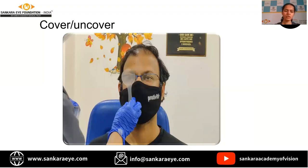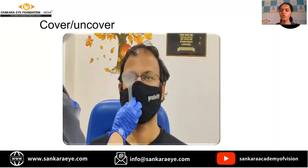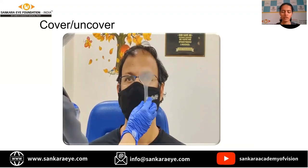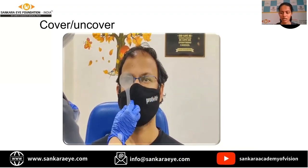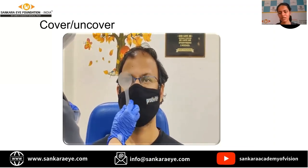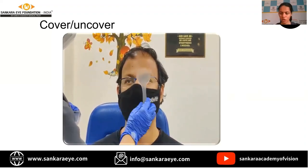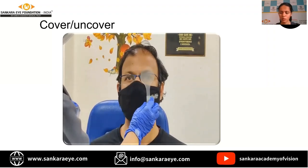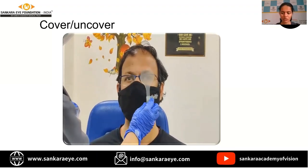Next in the motor evaluation of squint come the cover, uncover, and alternate cover tests. The prerequisites for doing these tests are central fixation, good vision, and no gross limitation of extraocular movement. For the cover test, you cover one eye and look for the movement of the uncovered eye — this detects tropia. For the uncover test, you occlude an eye and look for the movement of the same eye on uncovering it, which detects phoria. In the alternate cover test, you cover both eyes alternately, not allowing both eyes to be open simultaneously at any point — this detects both phoria and tropia.